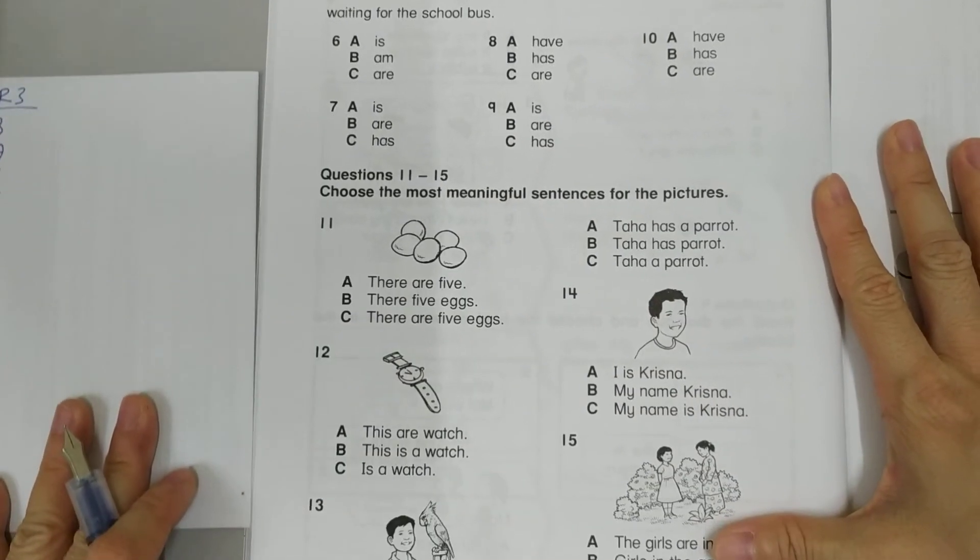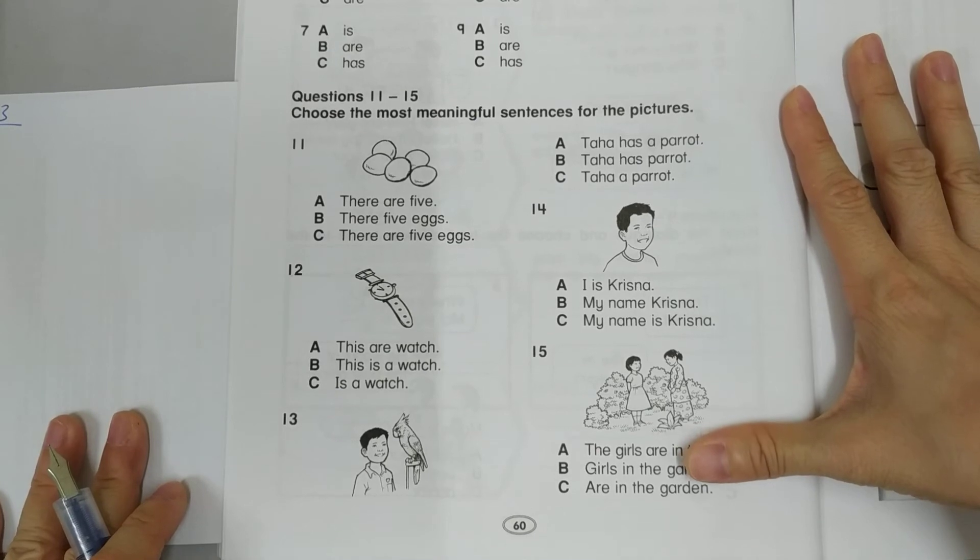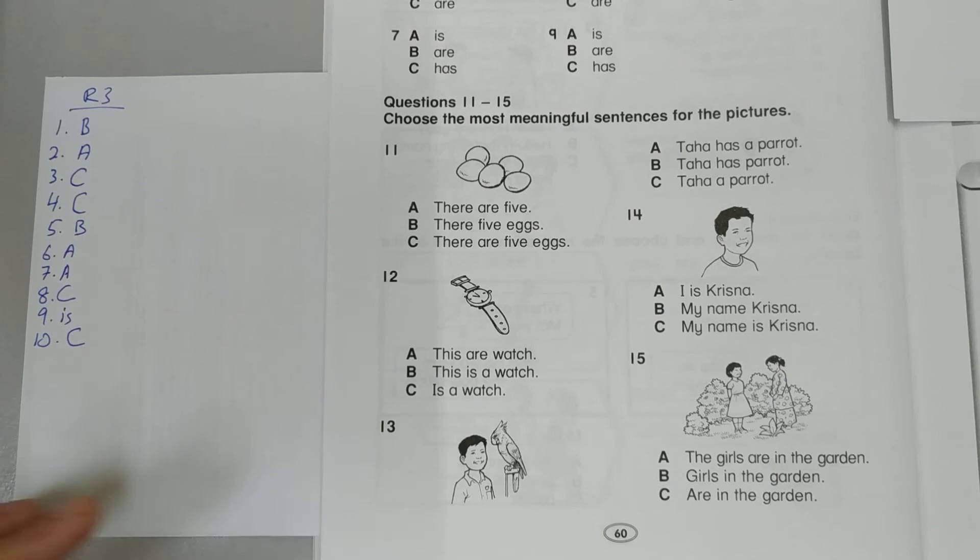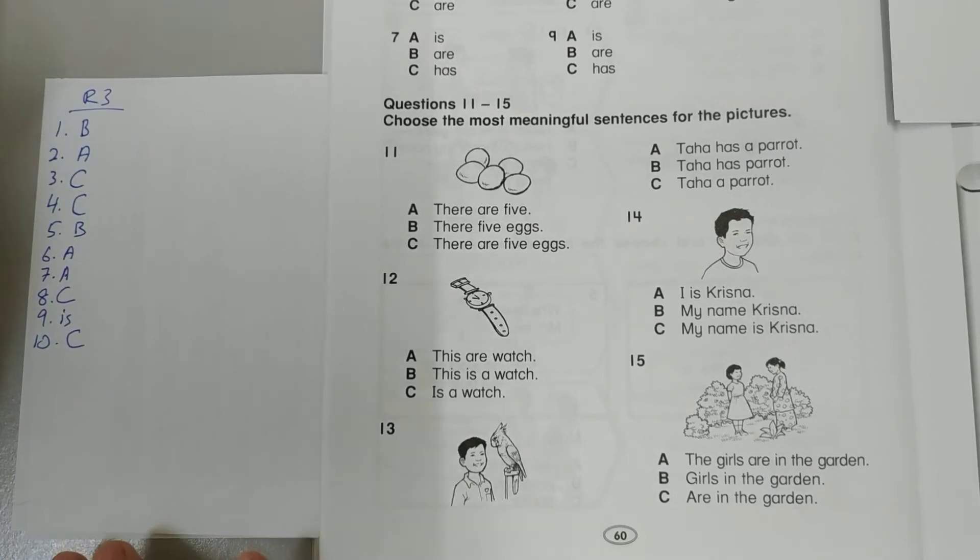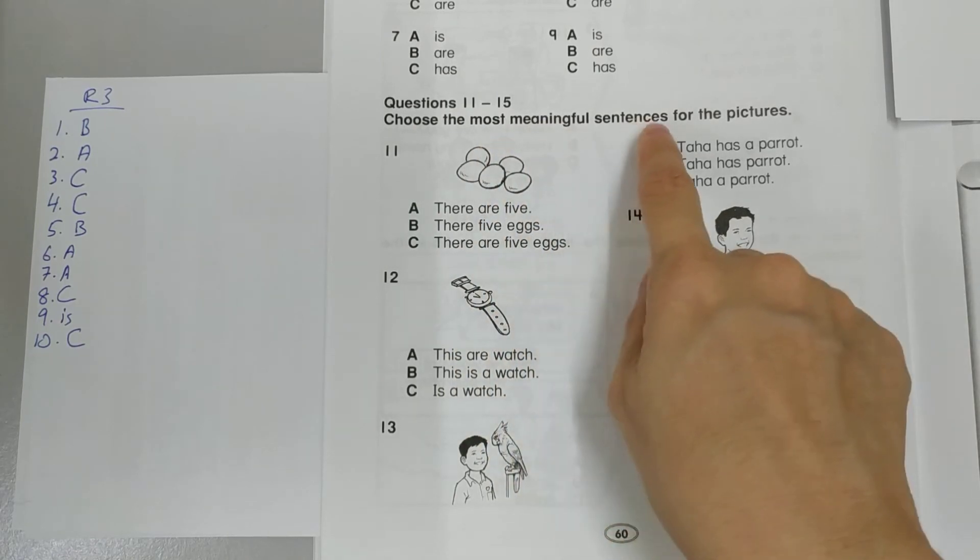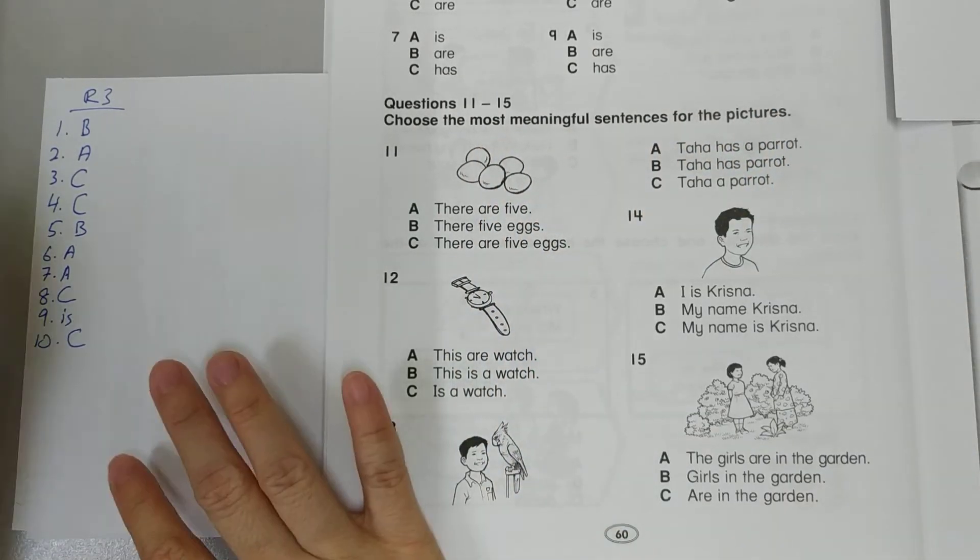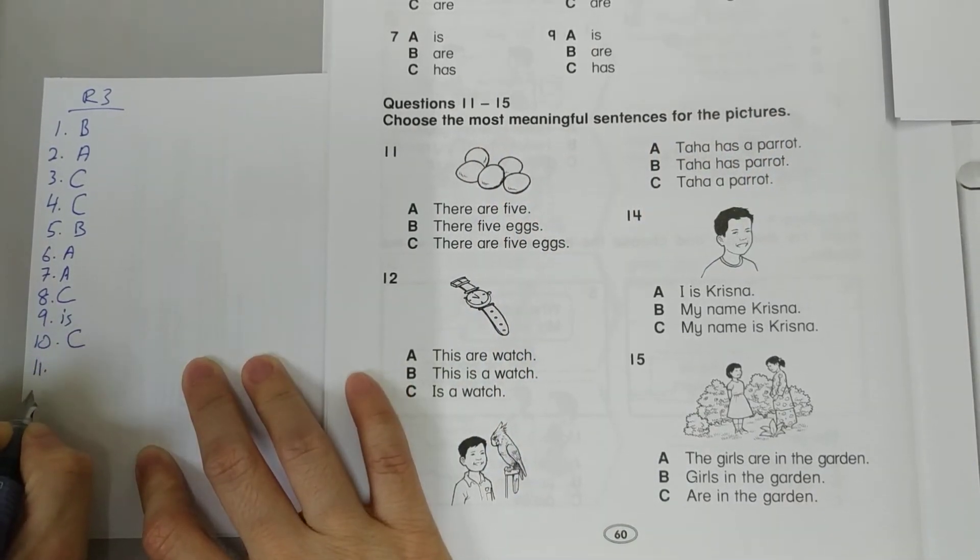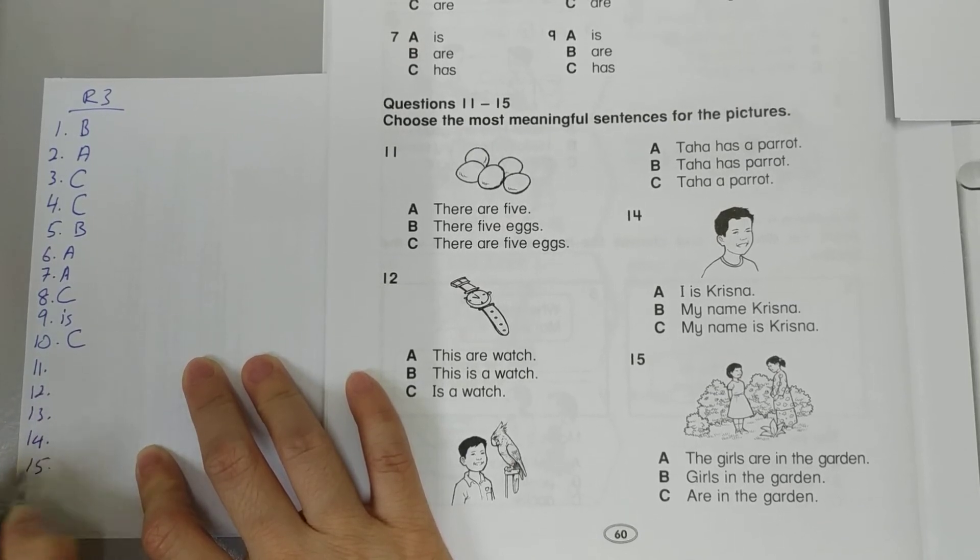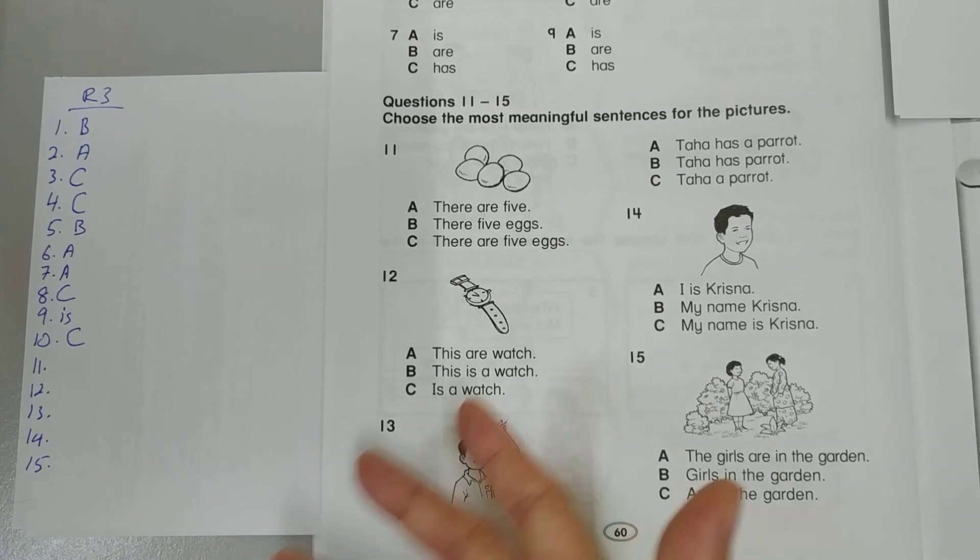So number 11 to 15. Let me push that a little bit. There we go. So questions 11 to 15. Choose the most meaningful sentences for the pictures. So 11, 14, and 15. I can finish all of that in one line.